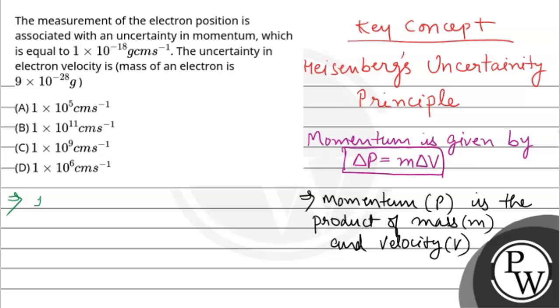So we get 1 × 10^-18 g·cm/s = 9 × 10^-28 g × ΔV. From here, ΔV is equal to...